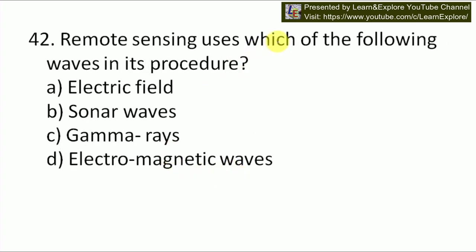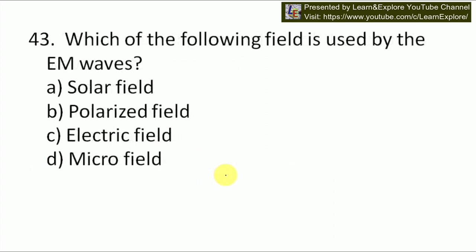Next question: remote sensing uses which of the following waves in its procedure — electric felt, solar waves, gamma rays, or electromagnetic waves? Our answer will be D — remote sensing uses electromagnetic waves in its procedure. Next question: which of the following field is used by electromagnetic waves — solar field, polarized field, electric field, or micro field? Electromagnetic waves obviously use the electric field. So our option is C.